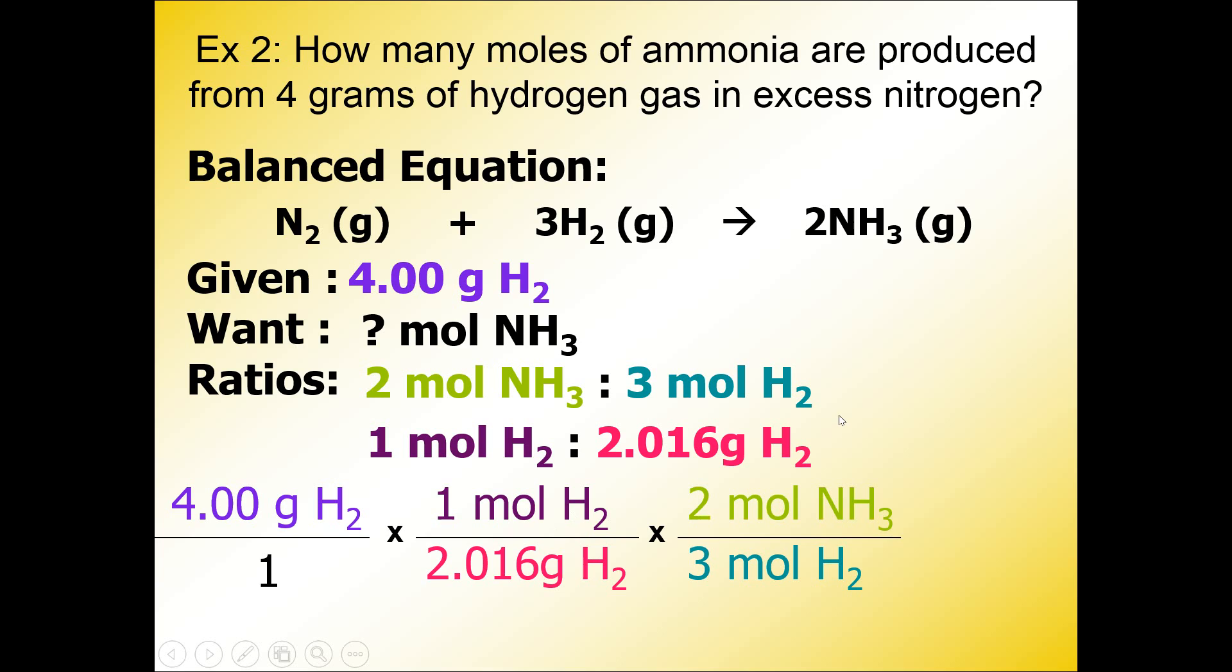Now if I just want to check and make sure I have all the numbers in the right places, I always like to look at the units and the substance and cancel them out diagonally. Look at the units and the substance and cancel them out diagonally, leaving me with moles of NH3. And now I can type it into my calculator.